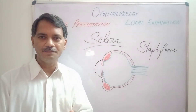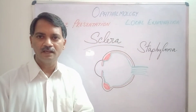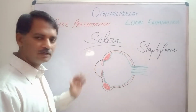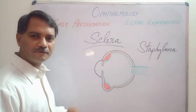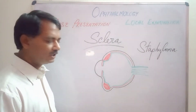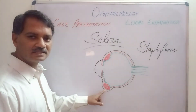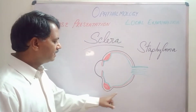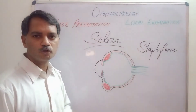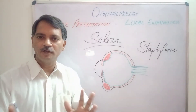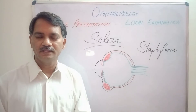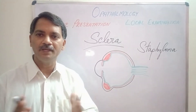Staphylomas are of five types. One is the anterior staphyloma, where the cornea and the iris are involved. Next is intercalary staphyloma, between the cornea and the area of the ciliary body. Then ciliary staphyloma. Next is the equatorial staphyloma. And finally, posterior staphyloma. Staphylomas are very common in glaucoma and in high myopia.